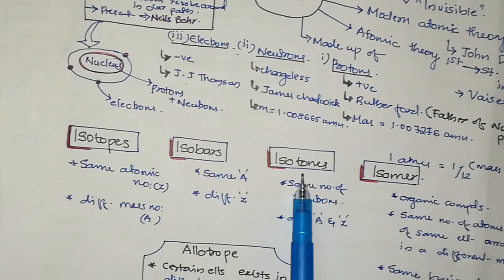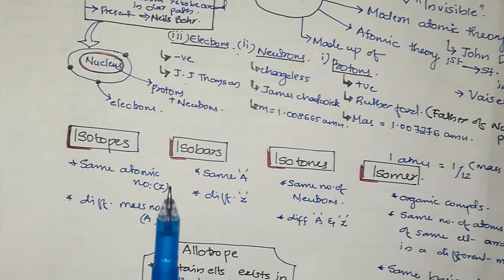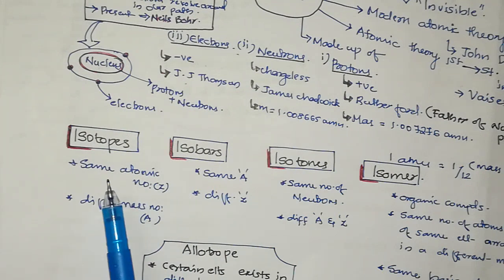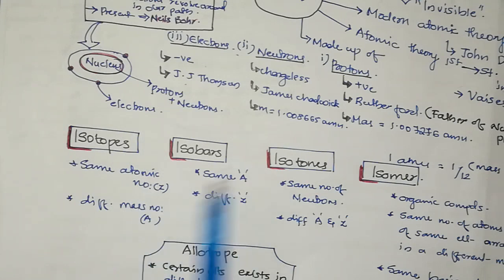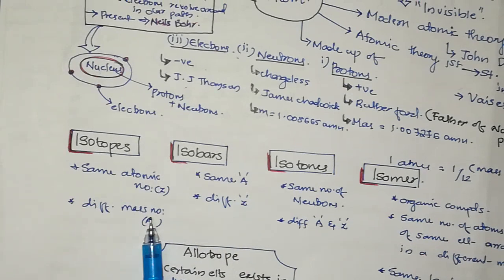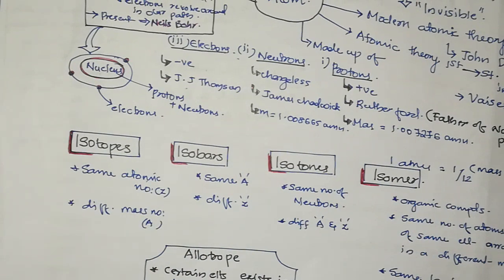Isotopes, isobars, isotons, isomers. Isotopes are atoms that have the same atomic number — meaning the same number of protons and electrons — but a different mass number. The atoms with the same atomic number but different mass number are called isotopes.